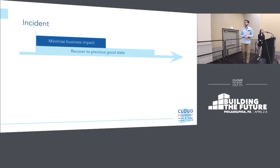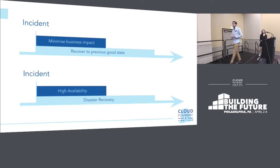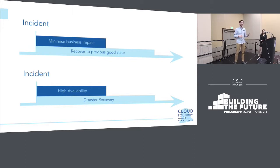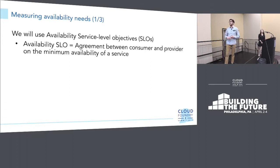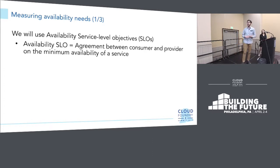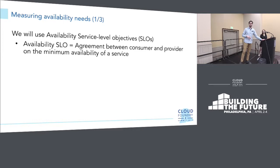Another way to think about this is in terms of time. When there is an incident, our first priority is to minimize business impact, and then to return to a previous good state. Today we'll talk about minimizing business impact using high availability — designing a platform for high availability — and recovering to a previous good state will be the second part of the talk on disaster recovery. First, we need to identify our availability needs using service level objectives. Availability SLOs are basically agreements between the consumer and provider of a platform about the minimum acceptable availability for that platform or workload.